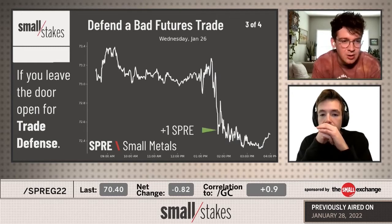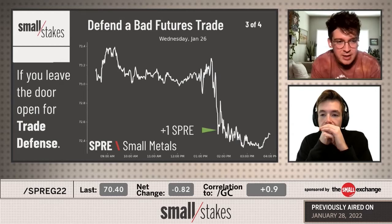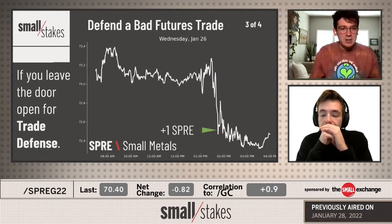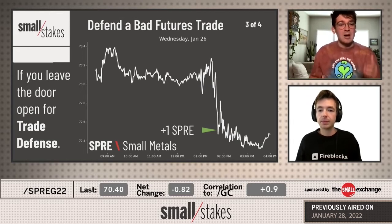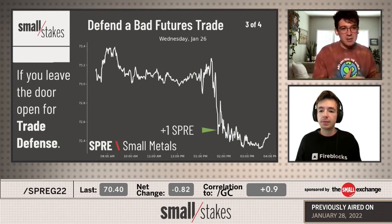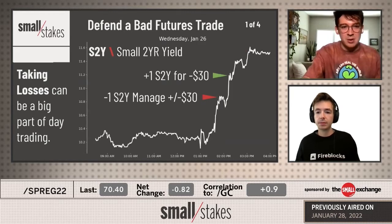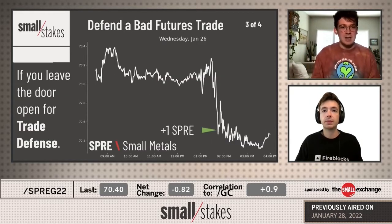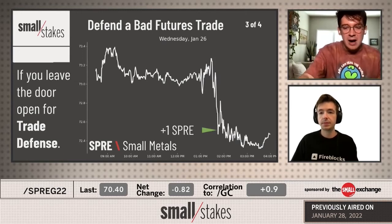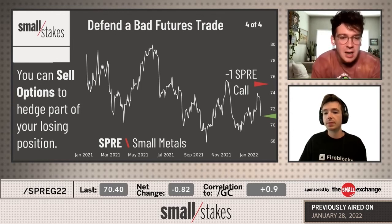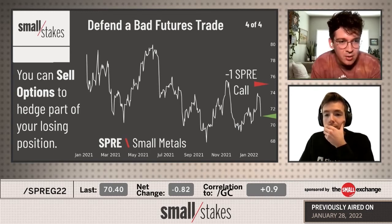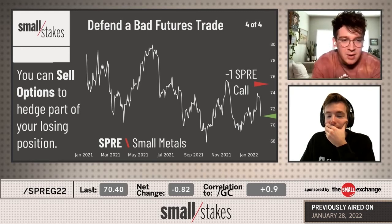There is an alternative, especially as Small Exchange adds options — you can leave the door open for further trade defense. This is a thin line to walk, and I'd push people to tell themselves at entry whether this is a trade they could see themselves holding longer — and if so, commit to this trade defense approach. In metals, for example, they moved down to historical lows on Wednesday, a big move lower. That's one where I don't mind buying the market and then defending by selling an option to hedge the losing position, then rolling that option out over time until the market comes back into my profit zone.